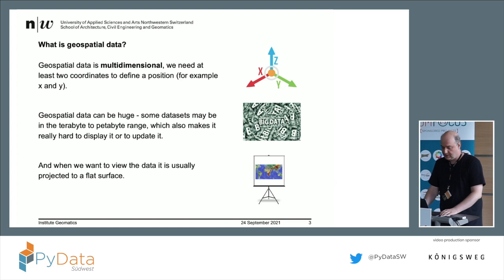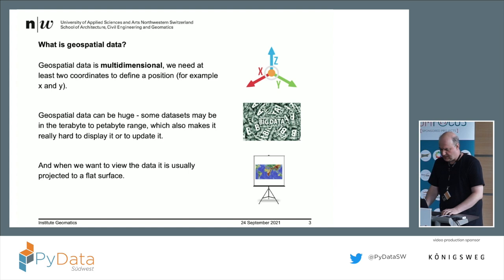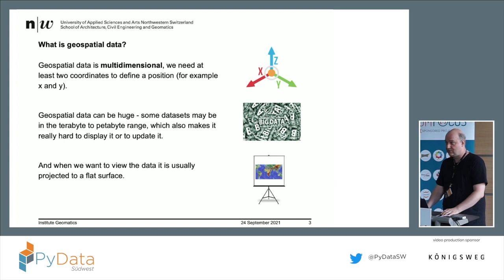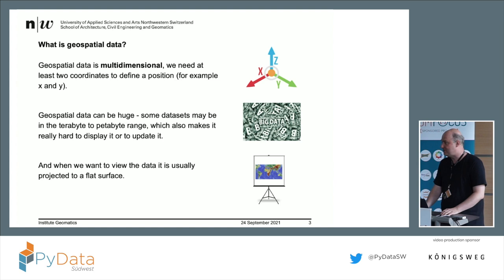What's geospatial data? There are actually three major points. The first is it's multidimensional — minimum two coordinates. Many datasets have a third one. And there is one thing about geospatial data: it can be really huge. For example, we have an open dataset of Switzerland orthophotos taken by plane at 10 centimeters per pixel over the whole country. That's about 12 terabytes, and if you stacked those floppy disks, you could go to the moon and back — just for a small country like Switzerland. That's a real challenge to process such a dataset.